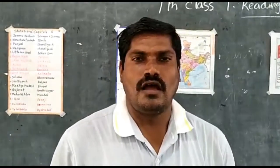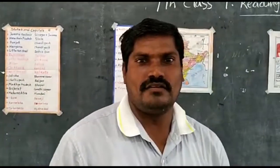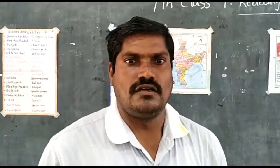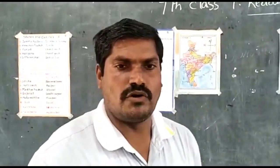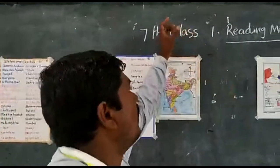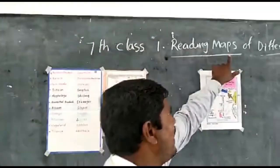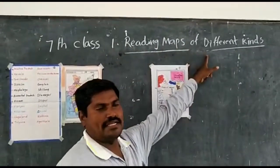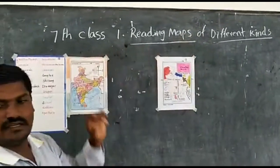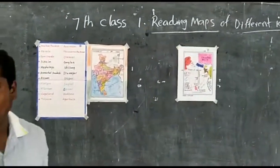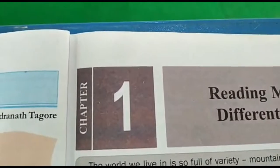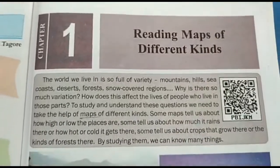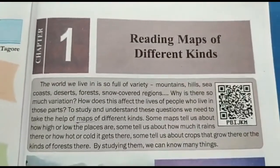Hello children, how are you? I hope you are all fine. You should stay in your home, don't go to other places. Today I want to discuss about the seventh class first lesson: Reading Maps of Different Kinds. In this lesson we are identifying four places. Today we are discussing about reading maps of different kinds. First of all, we are giving the introduction.